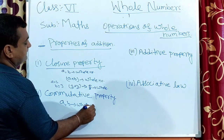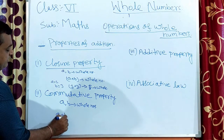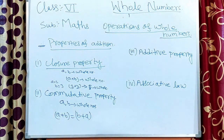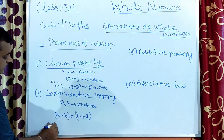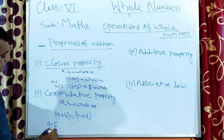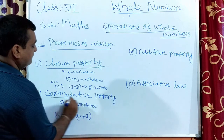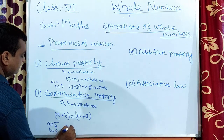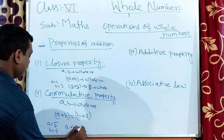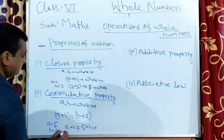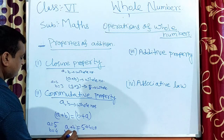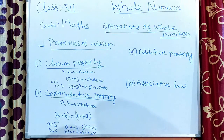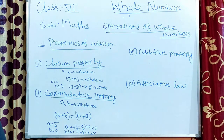The commutative property states that if a and b are whole numbers, then a plus b equals b plus a. For example, let a equals five and b equals four. Then a plus b is five plus four equals nine, and b plus a is four plus five equals nine. This confirms the commutative property.